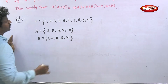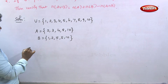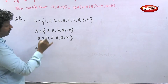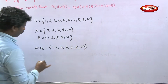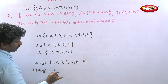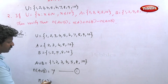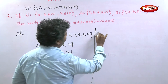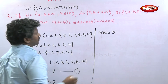Finding A union B by joining sets A and B: A union B equals {1, 2, 3, 4, 5, 8, 10}. The number of elements in A union B is 7 — this is equation one. n of A has five elements {2, 3, 4, 8, 10}, so n of A equals 5. n of B also has five elements {1, 2, 5, 8, 10}, so n of B equals 5.